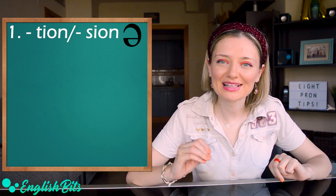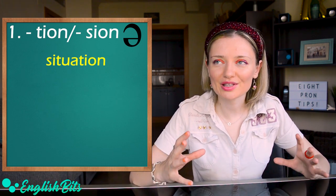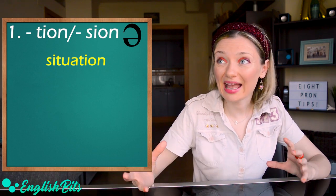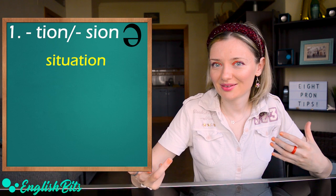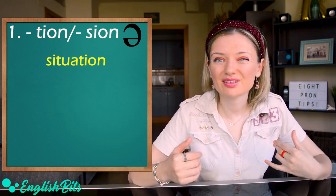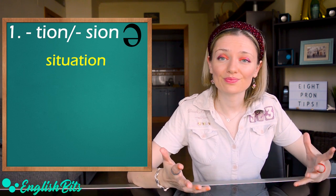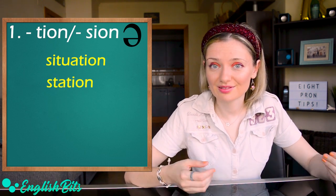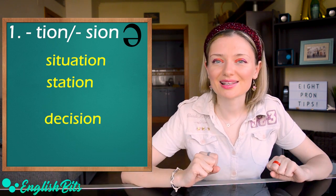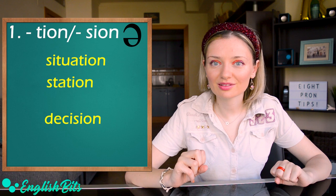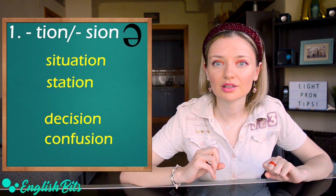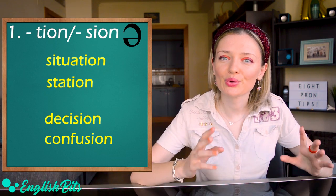The first one is situation. So we don't say situation. It's not o, it's not e. It's something very quick and it's almost nothing. Situation. Another example. Station. Two examples with s-i-o-n. Decision. Or another example. Confusion.